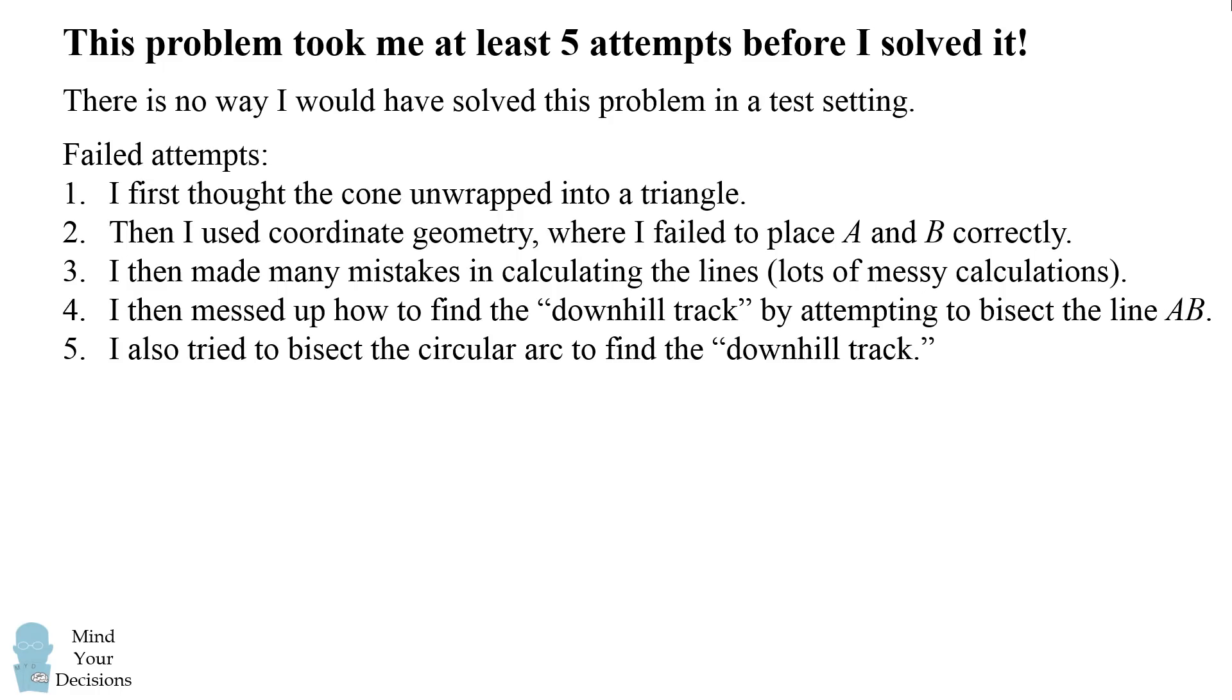The fourth mistake is that I messed up how to find the length of the downhill track because I tried to do it by bisecting the line AB. This is not correct. I then tried to solve it by bisecting the circular arc to find the downhill track.